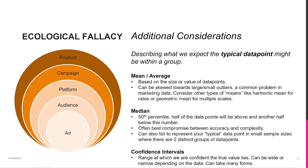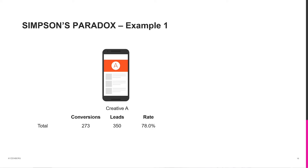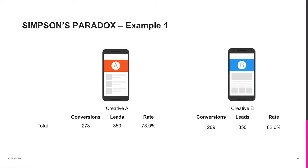Now let's get deeper into Simpson's paradox. Recall it's where trends reverse when a data set is separated into groups. Let's say we have a simple A/B test with data on conversions and leads for two creatives. For creative A, we see 273 conversions on 350 leads for a 78% conversion rate. For creative B, we have almost 290 conversions on 350 leads for an 83% conversion rate. So creative B is better — or is it?